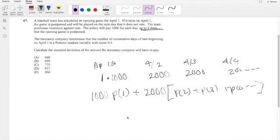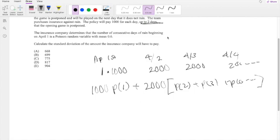Okay, so the first part is quite easy. We can think of this as 1,000 times the probability that it's going to rain on day 1, plus 2,000 times the probability it's going to rain on days 2, 3, 4, and so on. We know Poisson distribution has a probability of X equals little k equal to e to the negative 0.6 times 0.6 to the 1 over 1 factorial.